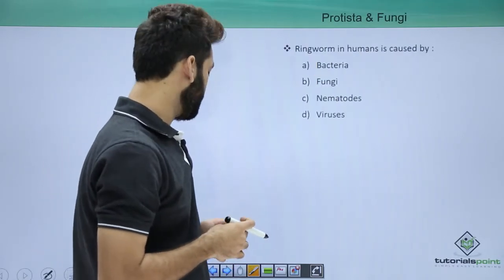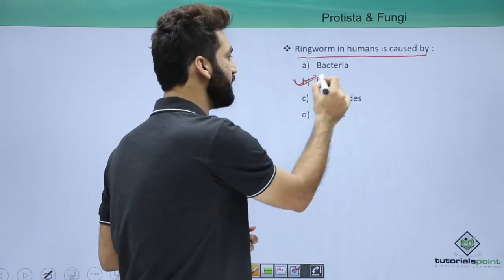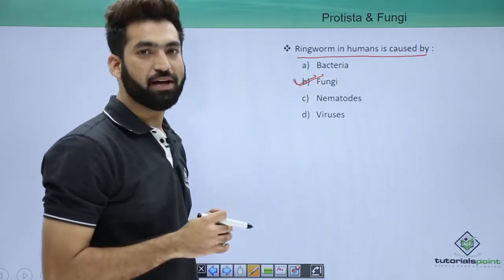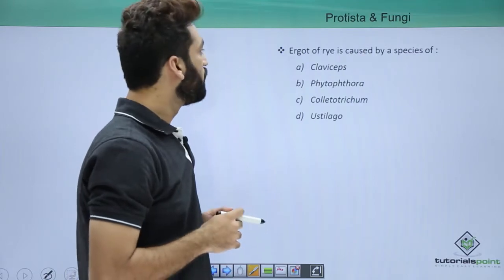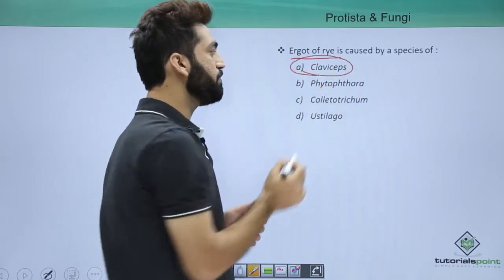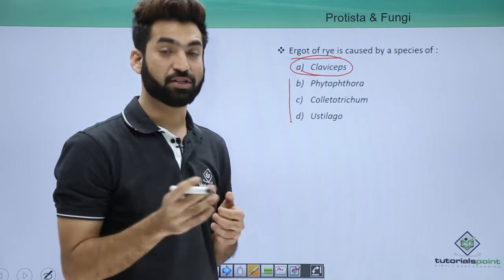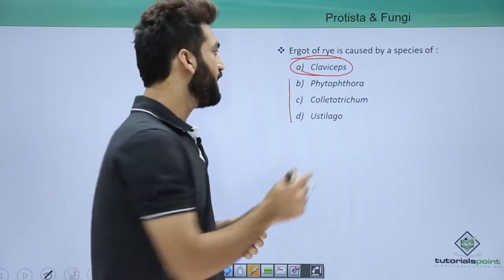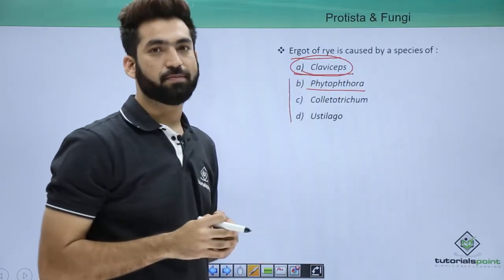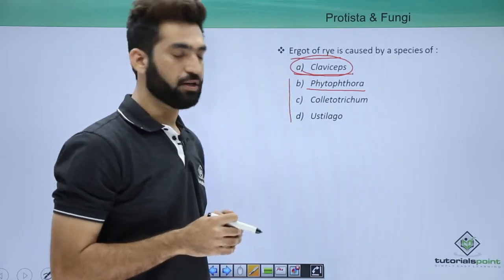Ringworm in humans is caused by a fungus. Moving to the next question: ergot of rye is a very important disease caused by Claviceps purpurea. Remember these names: smut is caused by a different organism; red rot of sugarcane is caused by Colletotrichum falcatum; late blight of potato is caused by Phytophthora infestans. Claviceps purpurea, which is also responsible for releasing LSD, causes the disease called ergot of rye.